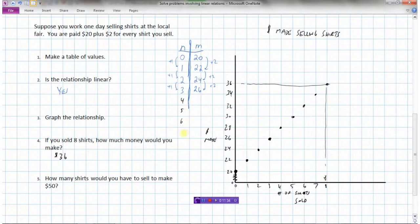Another way would be to continue the table. 3, 4, 5, 6, 7, 8. And then going up by 2 every time on here. So 28, 30, 32, 34, 36. So $36.